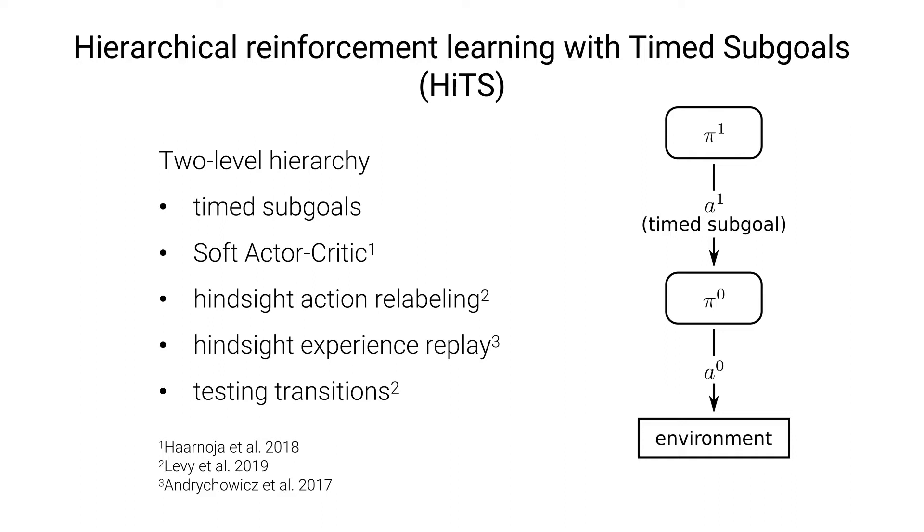To enable learning on the high-level while the low-level is not yet able to reach timed subgoals reliably, we use hindsight action relabeling. That is, we, in hindsight, replace the high-level action with the timed subgoal that was actually achieved. We additionally use hindsight experience replay on both levels for sample efficiency.